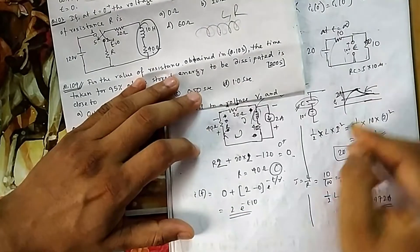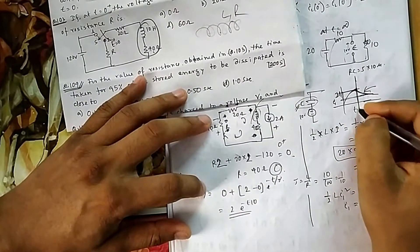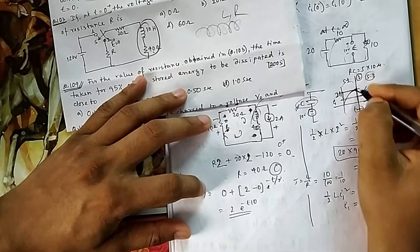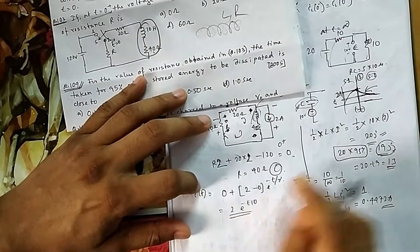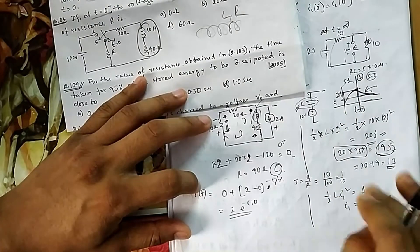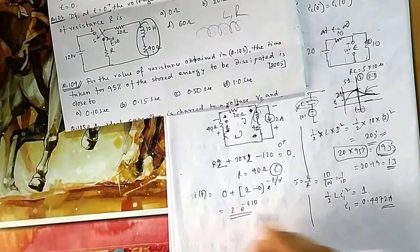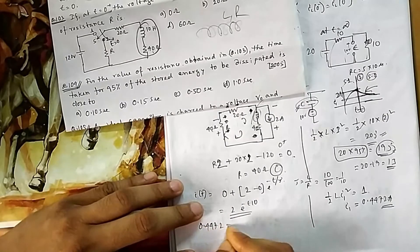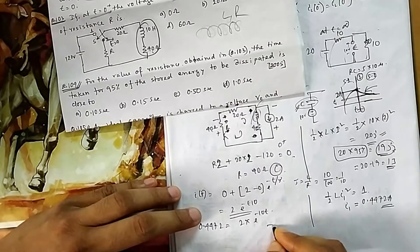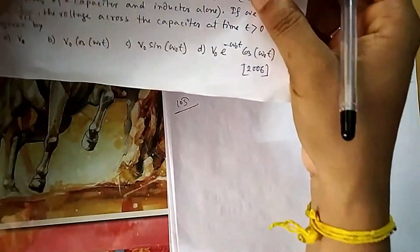Discharging starts at t = 0 (when switched to position 2). We solve 0.4472 = 2·e^(−10t). Using a calculator: e^(−10t) = 0.4472/2 = 0.2236, so −10t = ln(0.2236), giving t ≈ 0.15 seconds. That is option B.